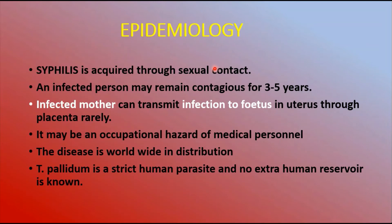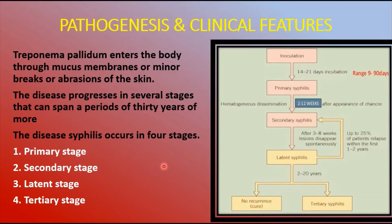Regarding epidemiology: syphilis is acquired through sexual contact only — no other route. An infected person may remain contagious for about three to five years. An infected mother can transmit the infection to the fetus in utero through the placenta, though this is rare. It is also an occupational hazard for medical personnel. The disease is worldwide in distribution, and Treponema pallidum is a strict human parasite with no extra-human reservoir known.